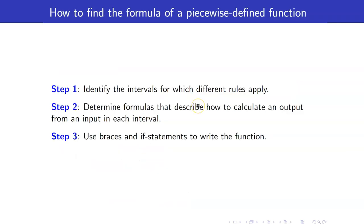Next, we want to find the formula of a piecewise defined function. The steps are: first, identify the intervals for which different rules apply; second, determine the formulas that describe how to calculate an output from an input in each interval; and lastly, use braces and if-statements to write the function.